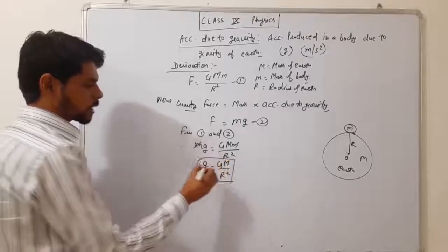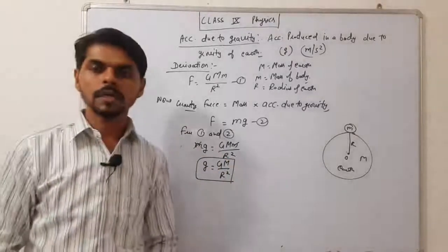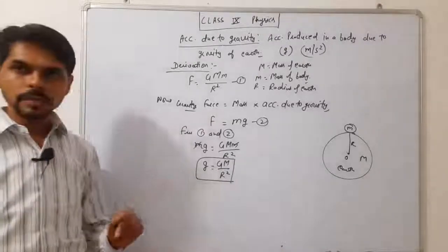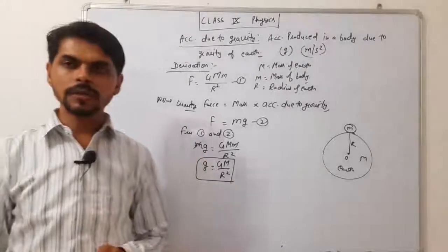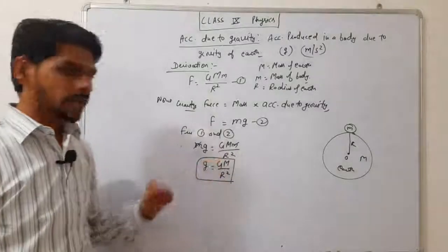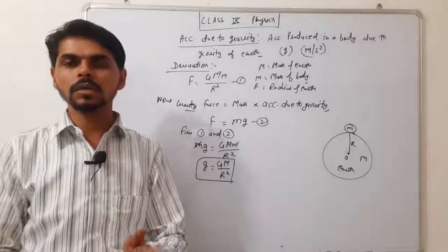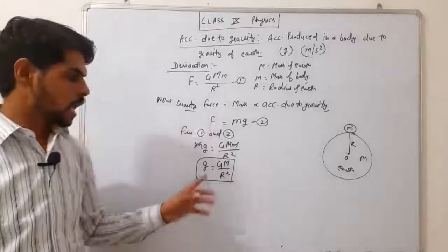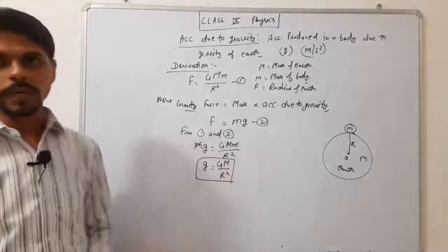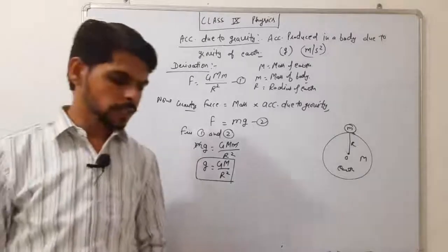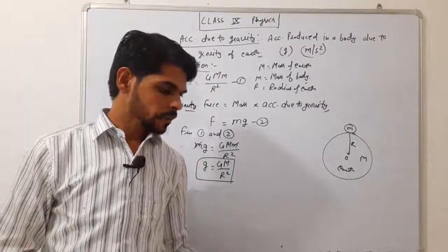Acceleration due to gravity calculate करने का formula है: g = GM / R². Small g is acceleration due to gravity. Capital G is the universal gravitational constant. Capital M is the mass of the planet — Earth का निकालना तो Earth का, किसी और planet का निकालना तो उसका। R उसी planet की radius। This is the formula to calculate acceleration due to gravity on the surface of any planet.